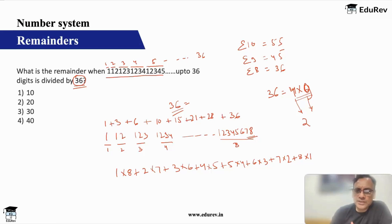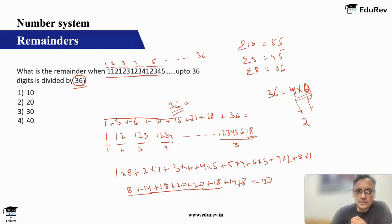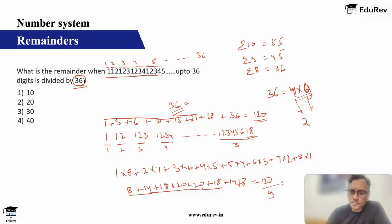Alternatively, you can sum each of the 8 parts: the first set sums to 1, second to 3, third to 6, fourth to 10, fifth to 15, sixth to 21, seventh to 28, eighth to 36. Both methods give the same total. Computing by frequency: 8×1 plus 7×2 plus 6×3 plus 5×4 plus 4×5 plus 3×6 plus 2×7 plus 1×8 equals 8+14+18+20+20+18+14+8, which equals 120. And summing the sets: 1+3+6+10+15+21+28+36 also equals 120. So the sum of digits is 120. 120 divided by 9: 9 times 13 is 117, so remainder is 3. This gives remainder 3.